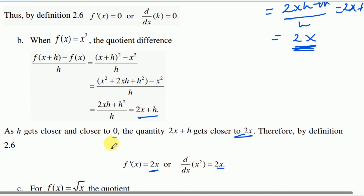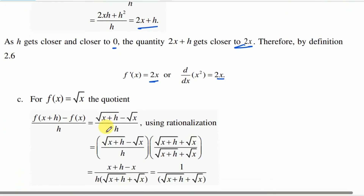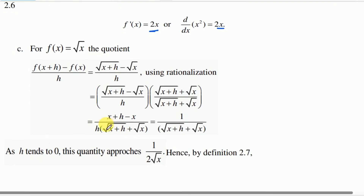Now if we let f of x equal to the square root of x, the equation form is: f derivative of x equals f of x plus h minus f of x, divided by h.